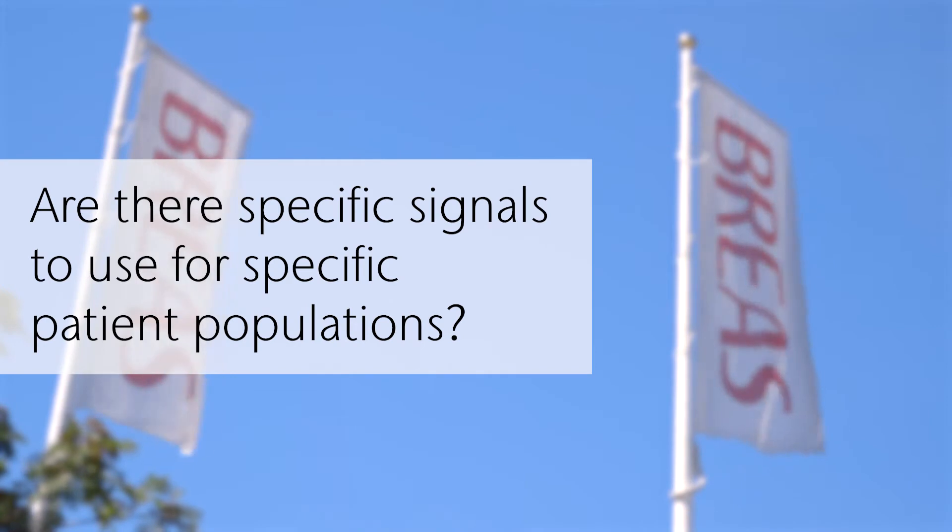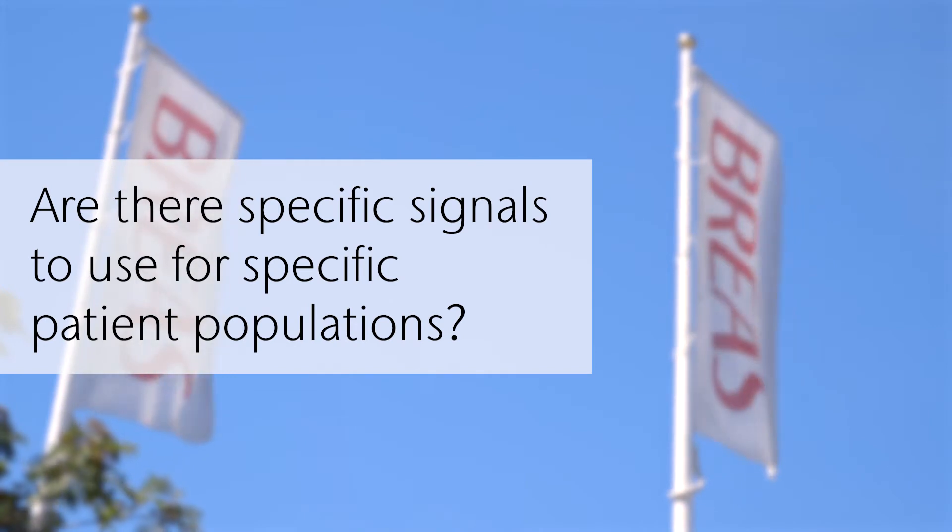The main recommendation is to proceed in a strictly sequential order. If we assess, for example, that our patient has a leak, we don't need to go further. The proper way to proceed is to correct the leaks and reassess the patient. How do we assess upper airway obstruction?